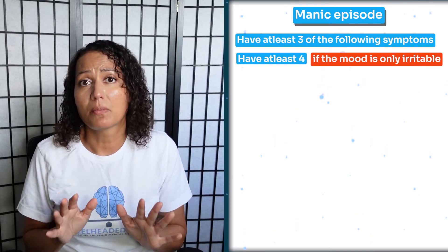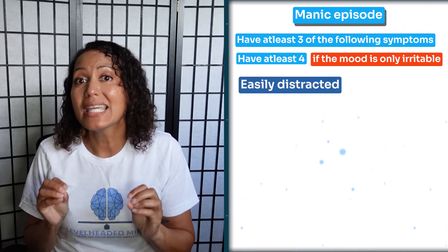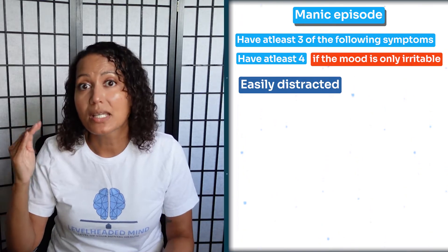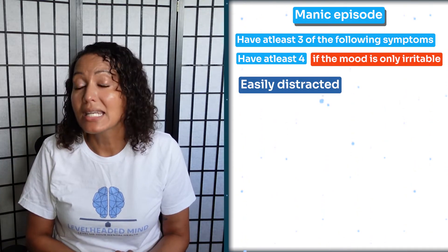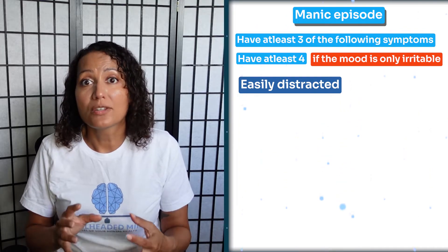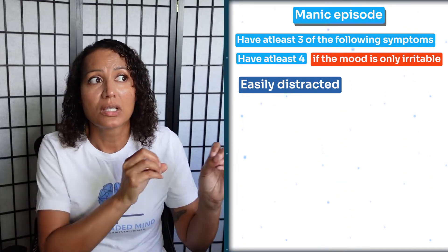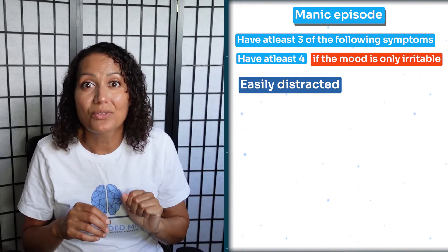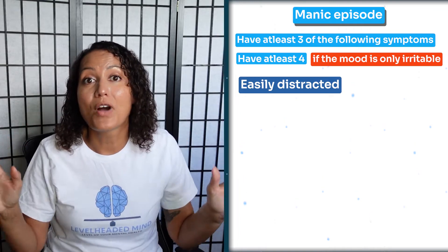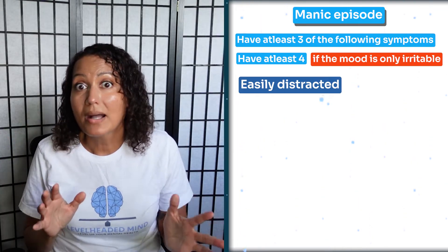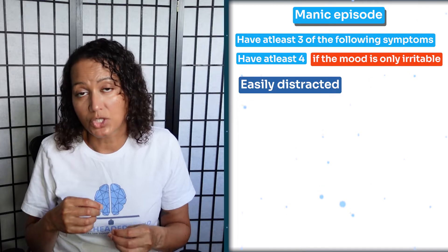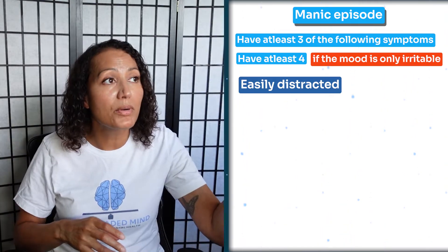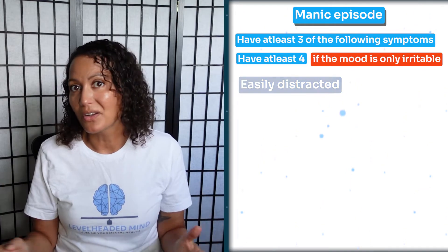The next symptom is being easily distracted. Not only are they distracted by their racing thoughts — which is very distracting in and of itself — but also by their environment: sounds, birds flying, other people walking by. They'll include that in conversation, jumping from one subject to another, saying things like 'Hey, did you see that person? And that bird over there, that was so pretty!' and just keep going on and on.